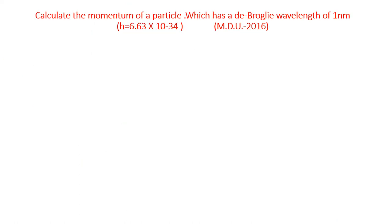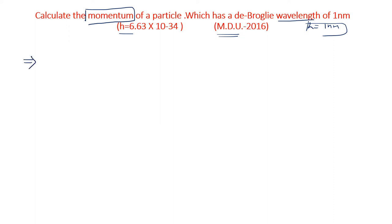The next question is: calculate the momentum of a particle which has a de Broglie wavelength. The wavelength given is lambda = 1 nanometer, and H = 6.63 × 10⁻³⁴. This question is from MDU 2016. This question is based on the de Broglie equation — lambda = h/mv, or lambda = h/p.